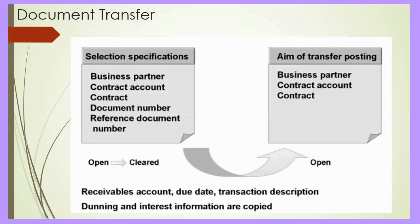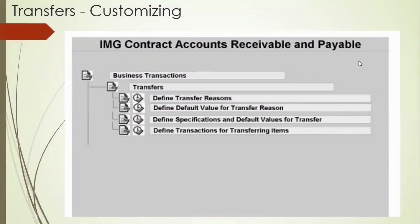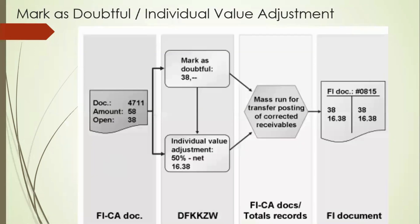Document transfer is like transferring the open items to another business partner. It is mostly a simple manual process. We need to go to SPRO, go to the transfer condition, and go to define transfer region for that condition. You need to put the region for the transfer condition, and at the end you can see the defined transaction for transferring the item. You execute the transfer by passing the business partner source and destination. The amount will move to another account.